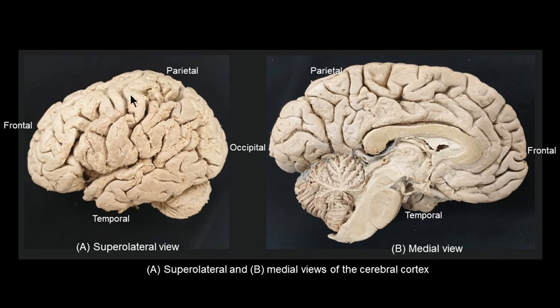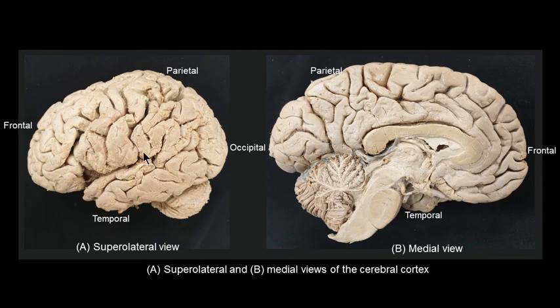Posterior to the central sulcus lies the general sensory cortex, or the primary sensory area, which is located inside the postcentral gyrus. This postcentral gyrus is sandwiched between the central sulcus in the front and the postcentral sulcus at the back. In fact, all three sulci — the precentral sulcus, the central sulcus, and the postcentral sulcus — run in parallel to each other.